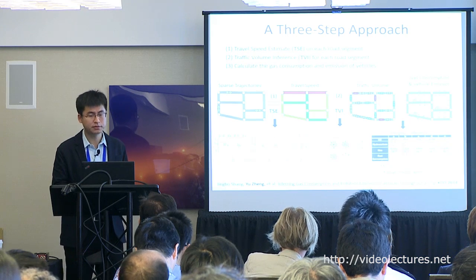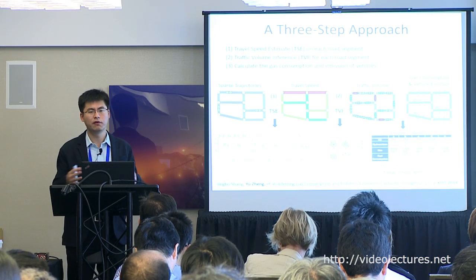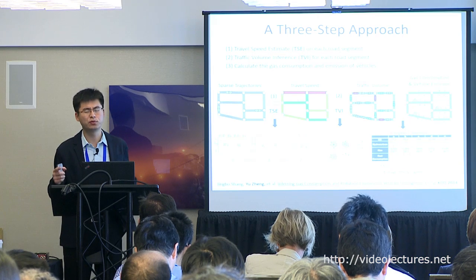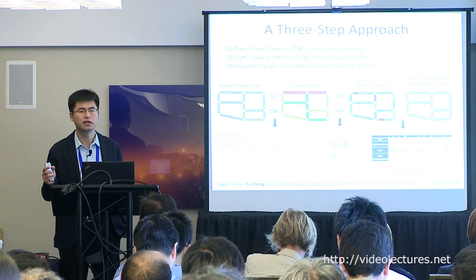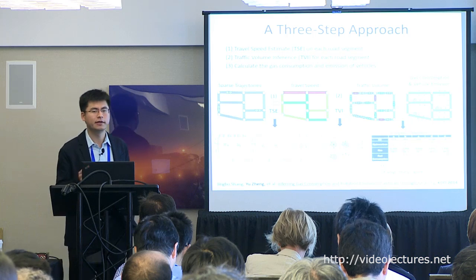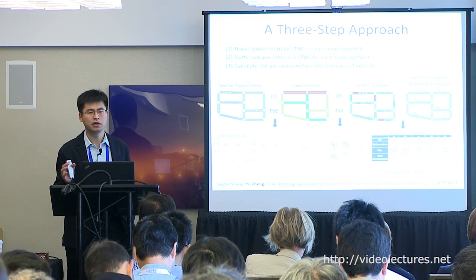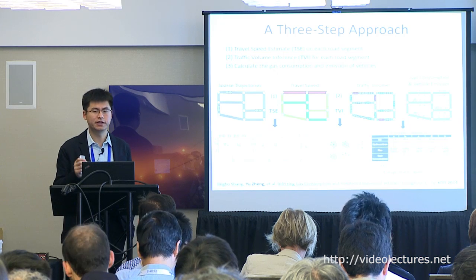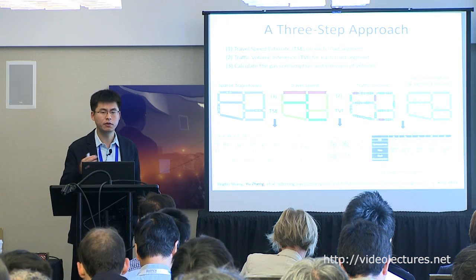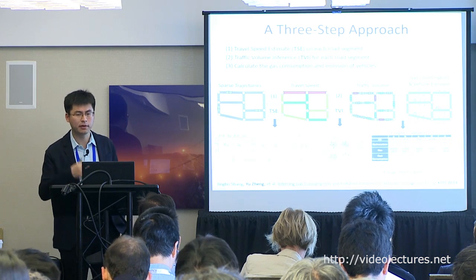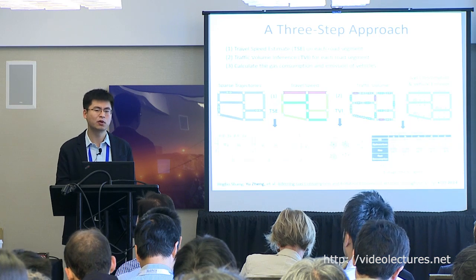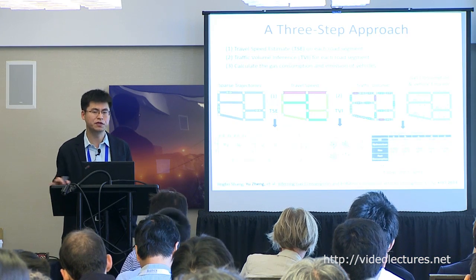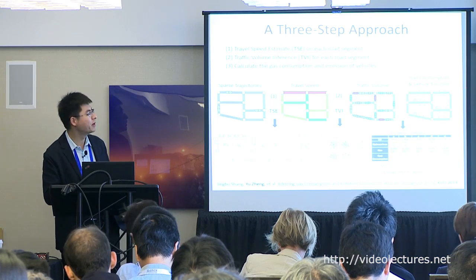For example, in Beijing the average engine capacity of vehicles is about 1.4 to 2.0 liters, with an average vehicle age of several years, and using European emission standard 3. Knowing such configuration, we can statistically estimate the traffic emission of these vehicles.